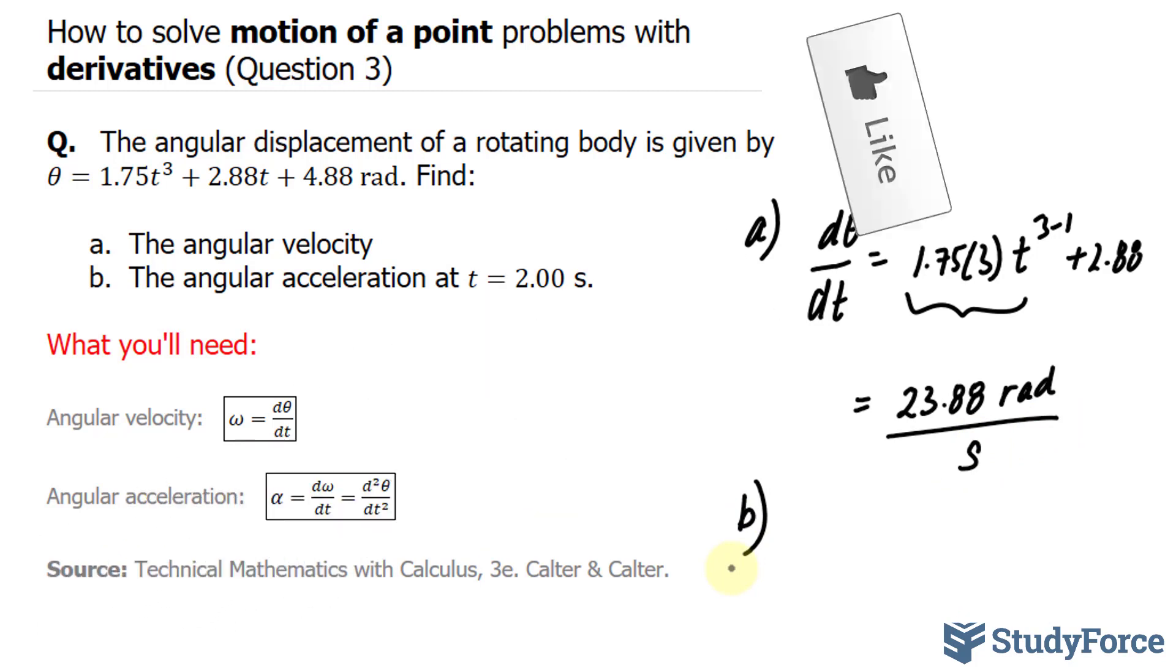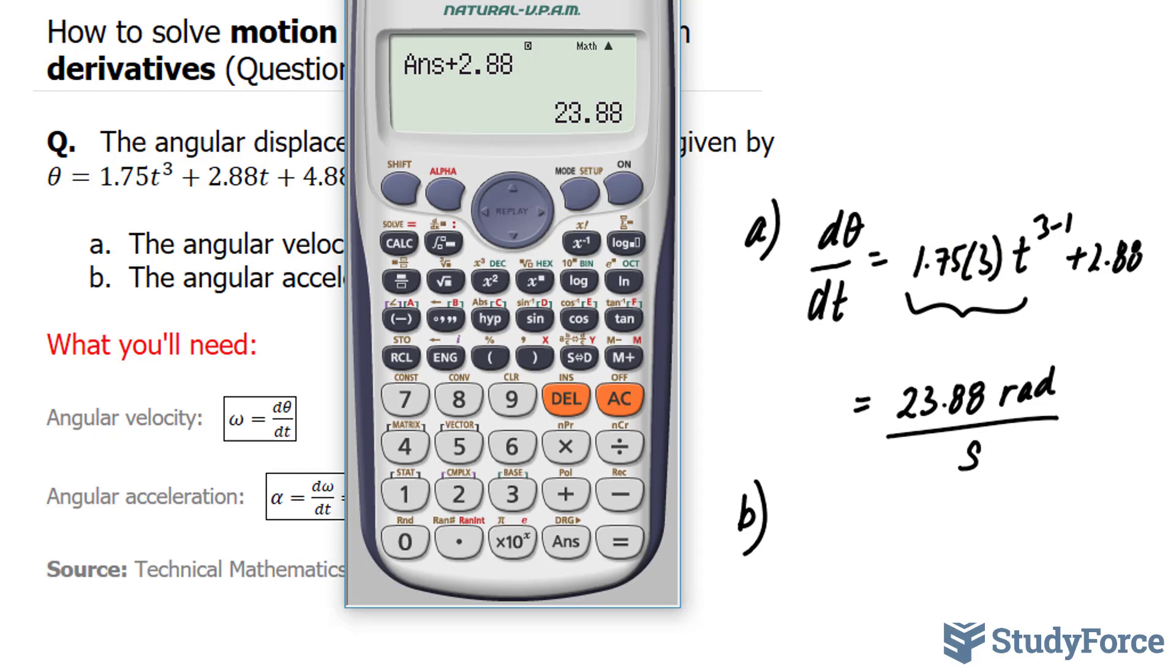For question B, we'll take the second derivative. So I'll find out what 1.75 times 3 is, because I'll need that for this. That's 21 over 4.